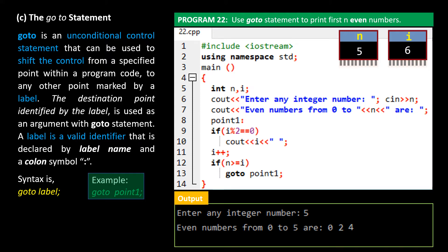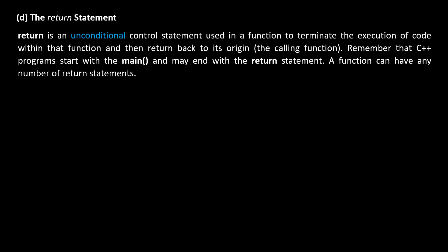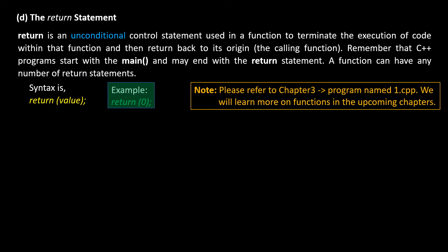Next is the return statement. Return is an unconditional control statement used in a function to terminate the execution of code within that function and then return back to its origin, or the calling function. Remember that C++ programs start with the main function and may end with a return statement. A function can have any number of return statements. Syntax is return value. Return 0 is an example. Please refer to chapter 3, program named 1.cpp, where we used the return 0 statement. We will learn more on functions in the upcoming chapters.